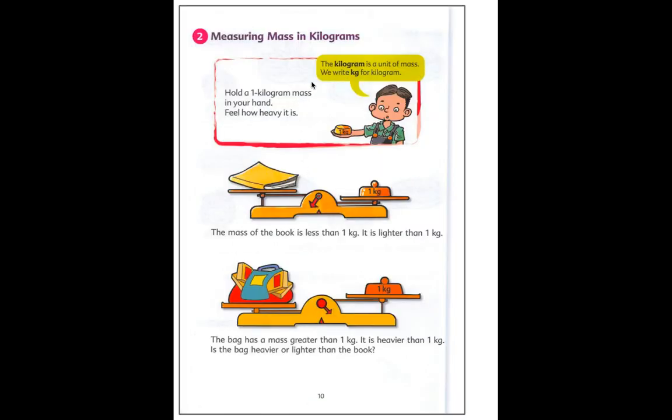Let's look at measuring mass in kilograms. The kilogram is a unit of mass. We can also abbreviate kilogram by writing KG. In this, this boy is holding an actual weight of one kilogram in his hand. When you're looking at how heavy it is, let's look at this balance scale now. The mass of the book is less than 1 kilogram. You could see that it's less than. So it's lighter than 1 kilogram because the 1 kilogram comes down further.